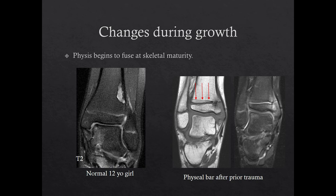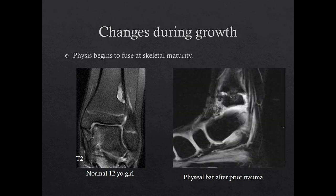Contrast the appearance of physeal fusion with a physeal bar, which can form after prior trauma to the physis. On the right, there is a physeal bar along the medial aspect of the distal tibial physis. This patient had a prior fracture of the ankle. If you look at this growth arrest line, you can see it is asymmetric and does not parallel the physis. Therefore, although this physeal bar is small, it will lead to an angular deformity of the ankle over time. You can see the physeal bar even better on this sagittal gradient echo image in the same patient, where there is an absence of the normal bright physeal signal.